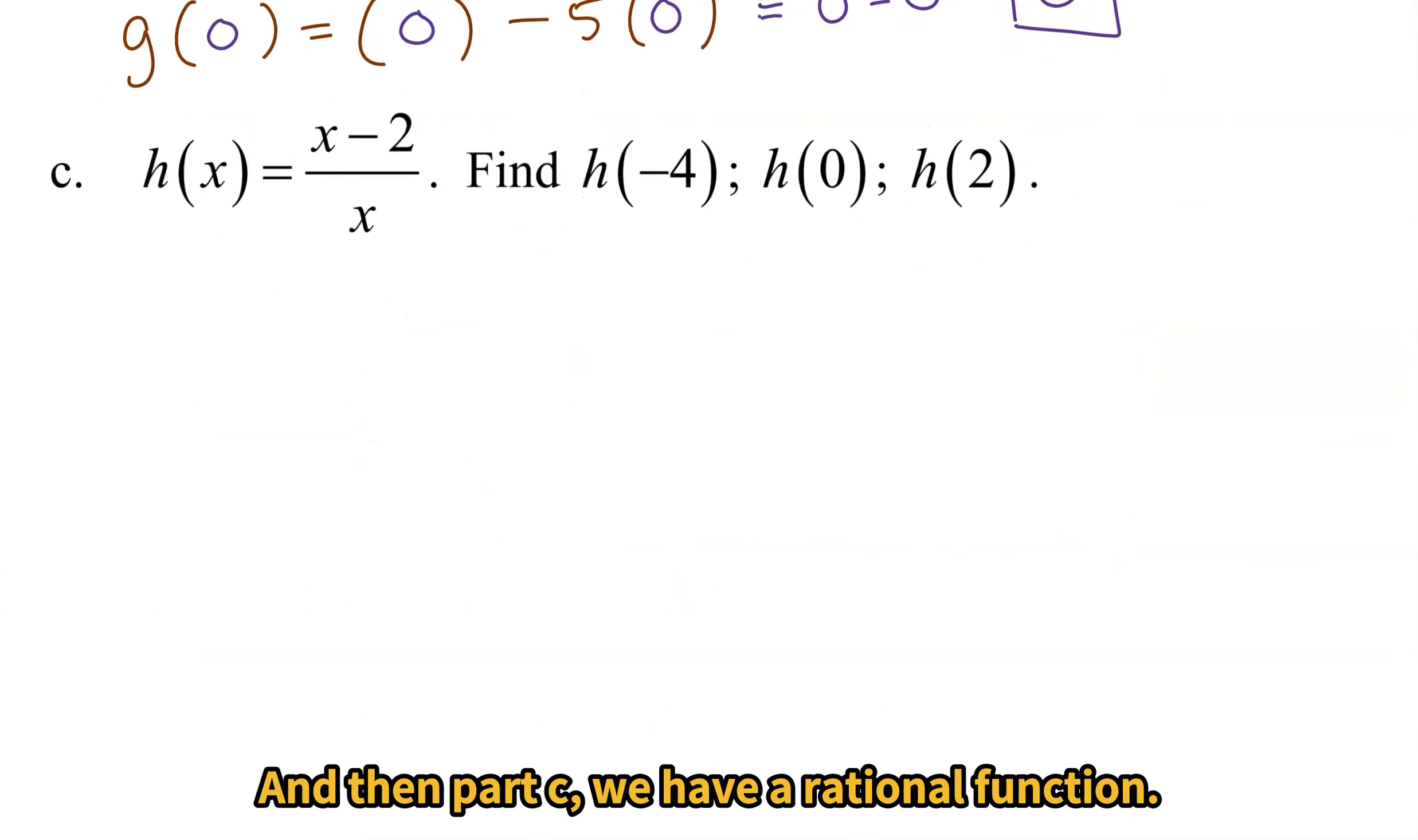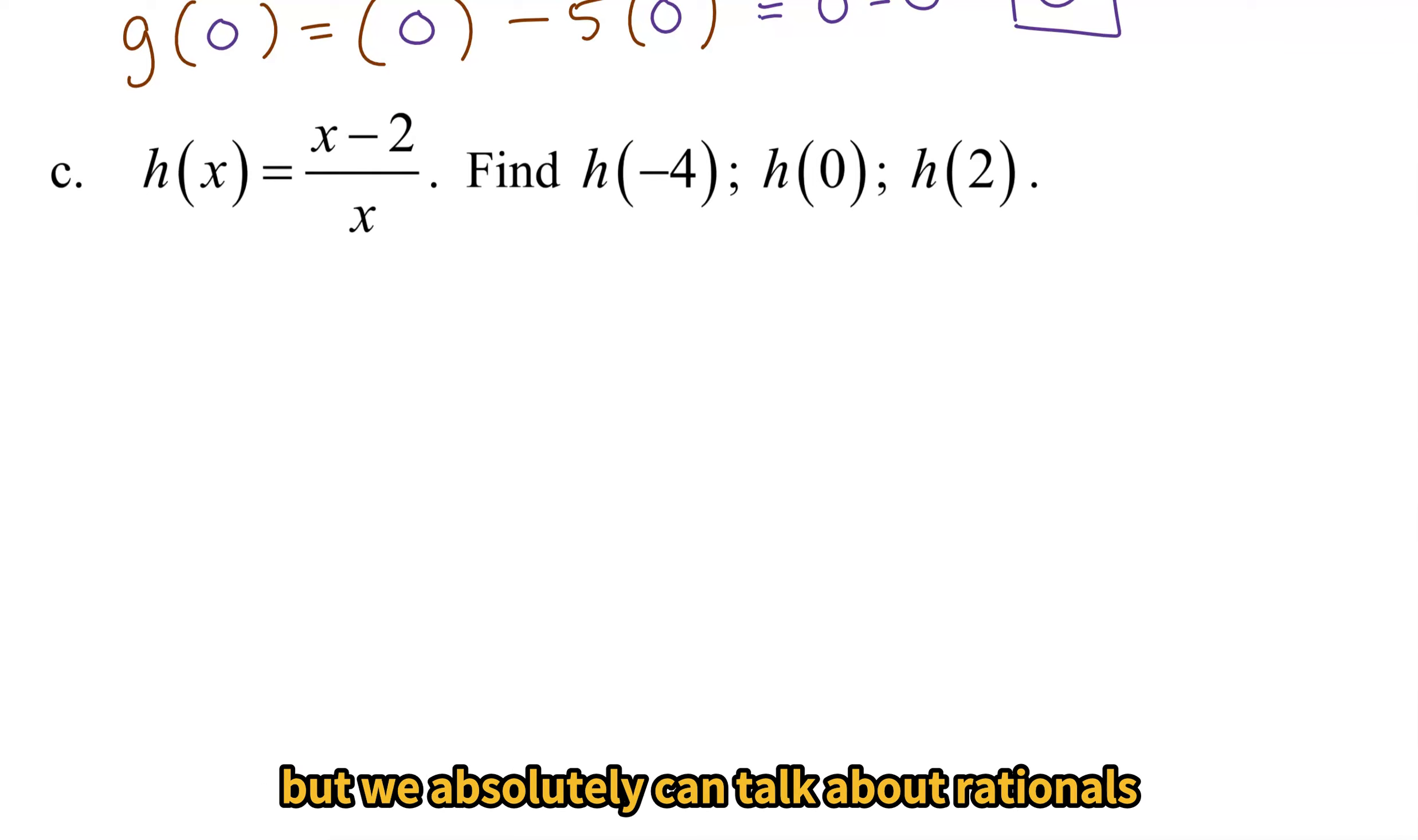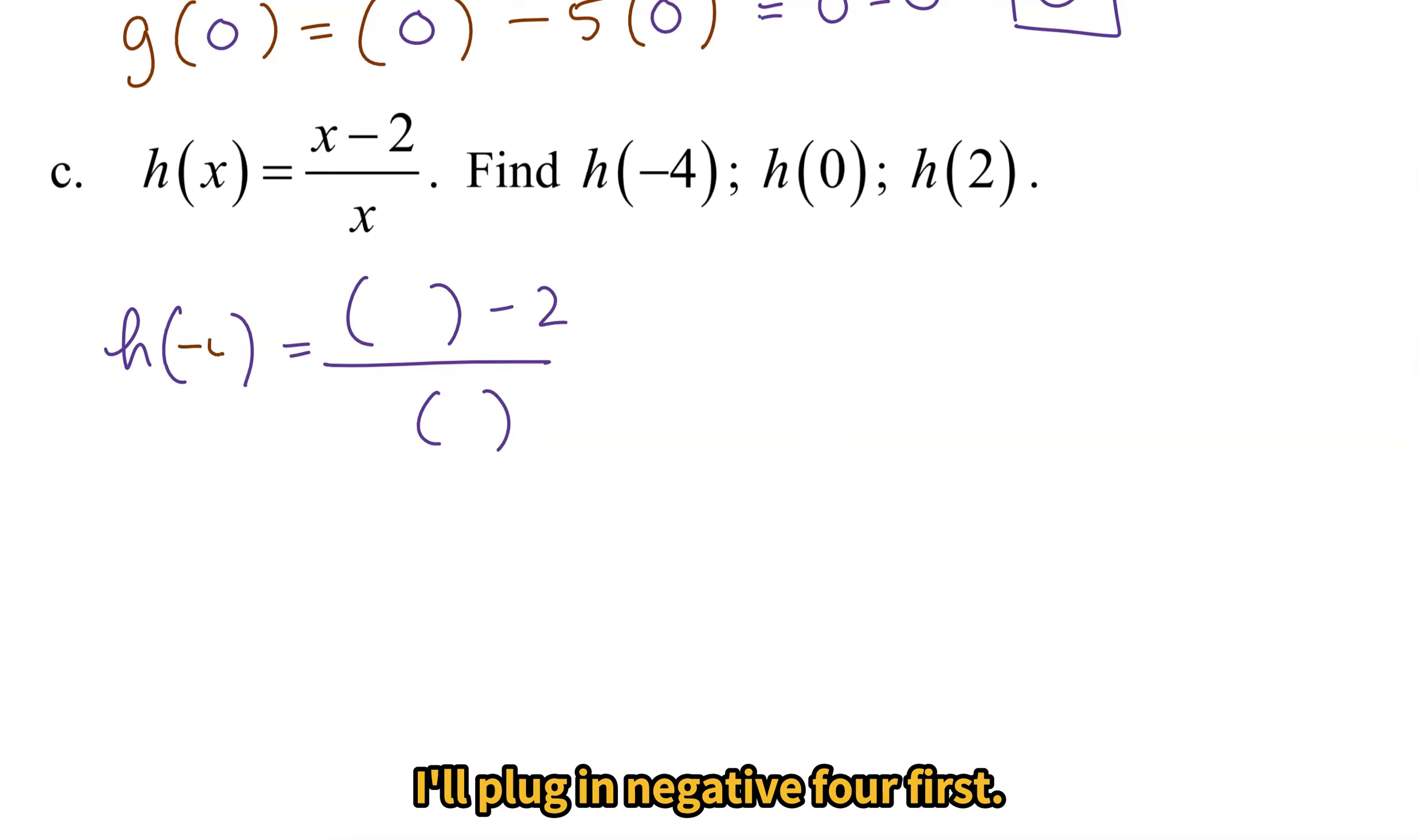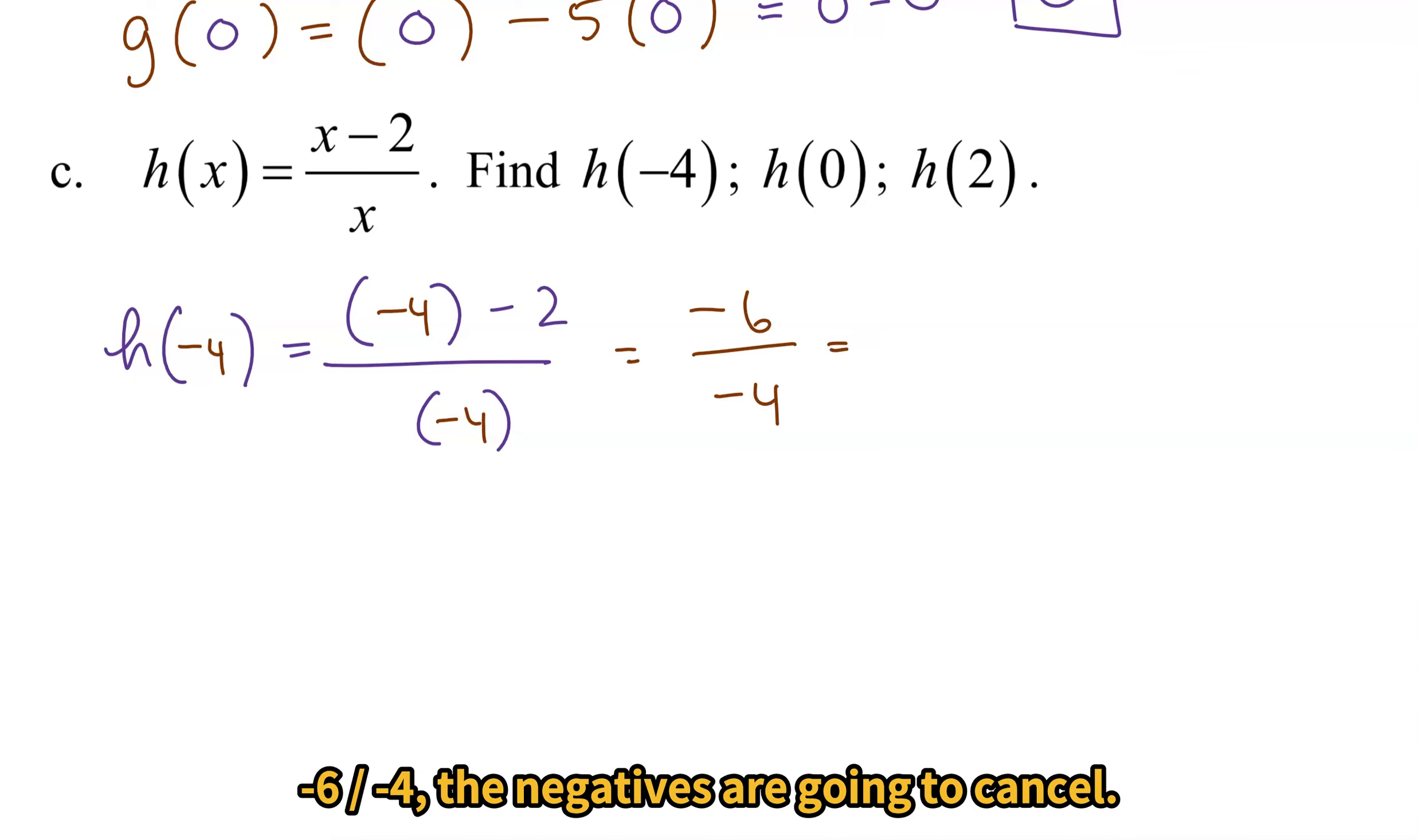And then part C, we have a rational function. We just finished our chapter on rational expressions and rational equations. But we absolutely can talk about rationals in the context of functions. So here we go. Let's create our skeleton. I'll plug in -4 first. And then we simplify. -4 - 2 will give me -6. -6 divided by -4. The negatives are going to cancel. 6 and 4 have a common factor of 2 in them. So if I cancel out that common factor, I'll get 3/2.